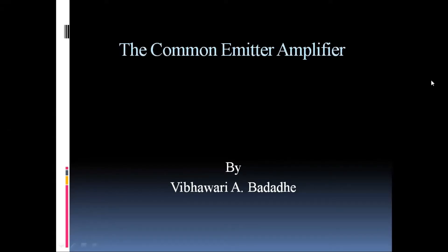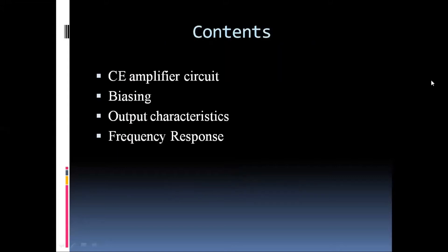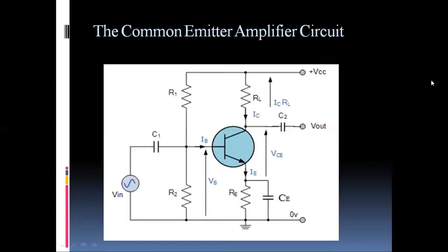Today we are going to discuss the common emitter amplifier. First we will look at the CE amplifier circuit, then we will go for the biasing circuit or network used in the CE amplifier, then we'll see the output characteristics, and finally we will see the frequency response of the common emitter amplifier.